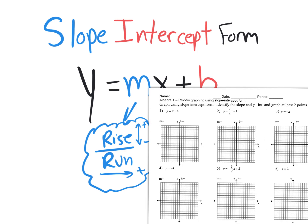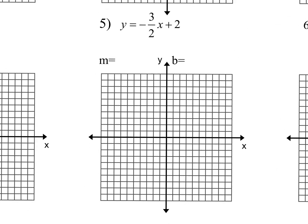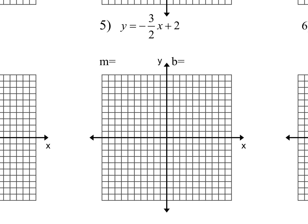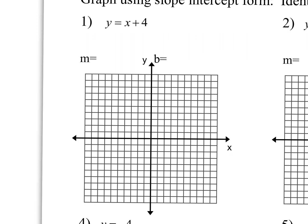So let's go back to our worksheet and go to number one. They even put right here m equals what and b equals what. What number is in front of x? One — if there's no number, that means there's an invisible one right there. That's your m. Now, we want it in terms of a fraction, in terms of rise over run, so it's going to be one over one. So the slope is really up one over one.